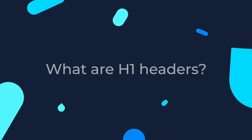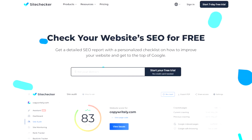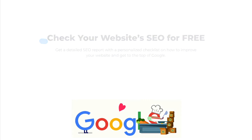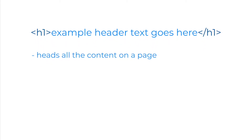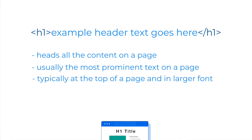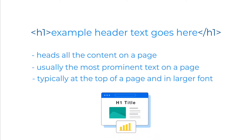What are H1 headers? H1 headers are the primary header of any page and they can yield significant benefits to the SEO of a page when optimized for target keywords. H1 header is defined within this tag. This header is designed to add all the content on a page and is usually the most prominent text on a page. Typically, it can be found at the top of the page in a larger font than the rest of the text.